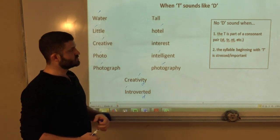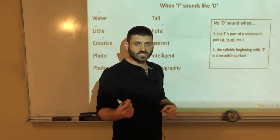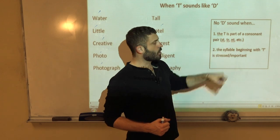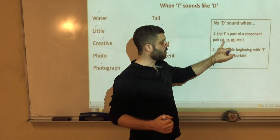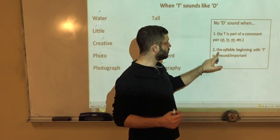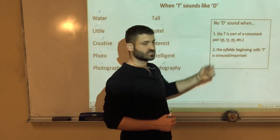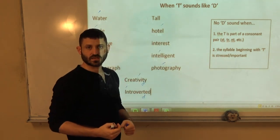So, again, just to summarize some things I've already said. You don't make the D sound when the T is part of a consonant pair. For example, N-T. Or, T-R or S-T. And, number two, when the syllable beginning with T is stressed. As in, hotel. You want to keep the T sound.